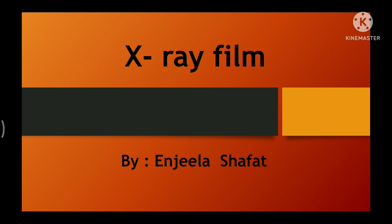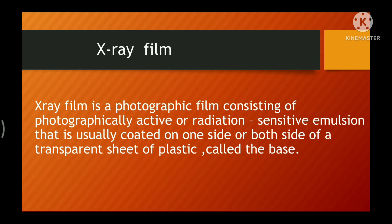When we talk about X-ray film, it means the film on which we can detect or diagnose abnormalities of a body. It's a type of material on which we can diagnose or detect abnormalities like bone fracture, infection, calcification, stones, and more. In radiology, we use a particular type of film known as X-ray film, defined as a photographic film consisting of a photographically active or radiation-sensitive emulsion coated on one or both sides of a transparent sheet of plastic called the base.